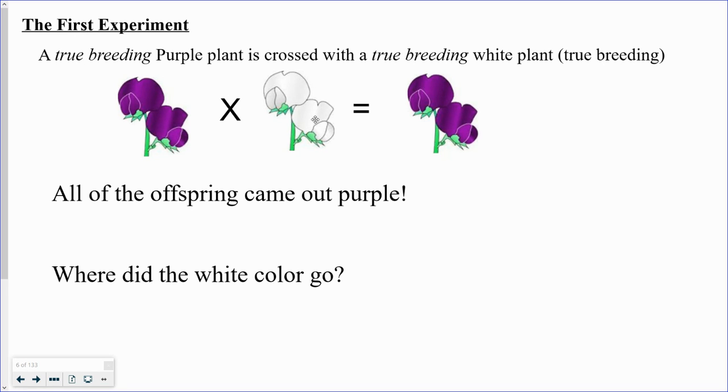So what happened to the white? If this one was true breeding and it always passes on white as a characteristic, why don't we see that in these plants?